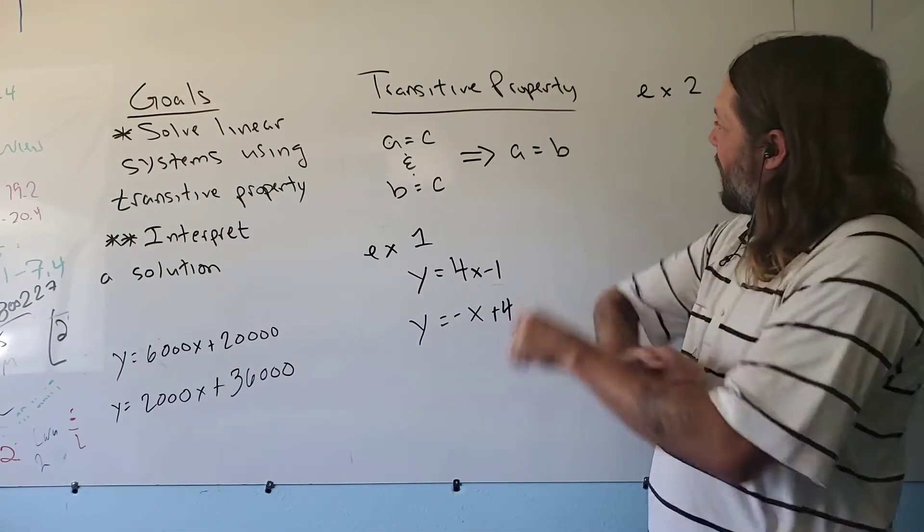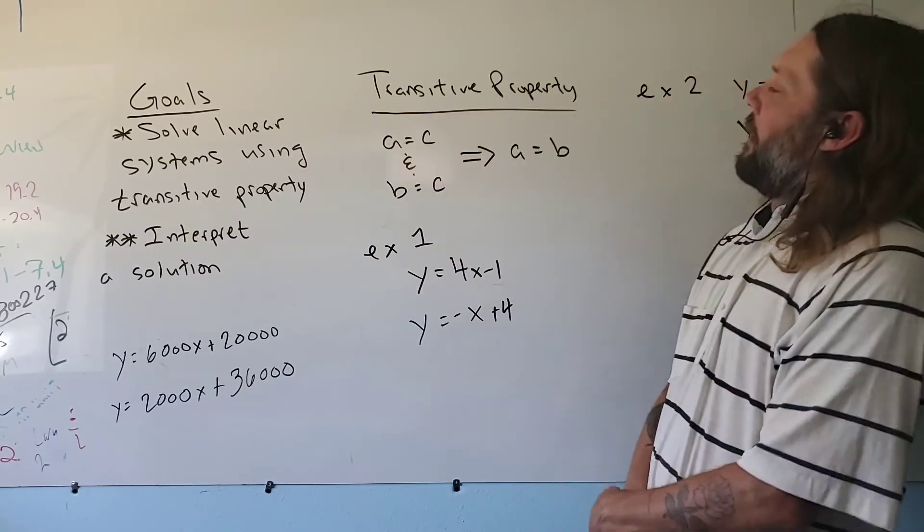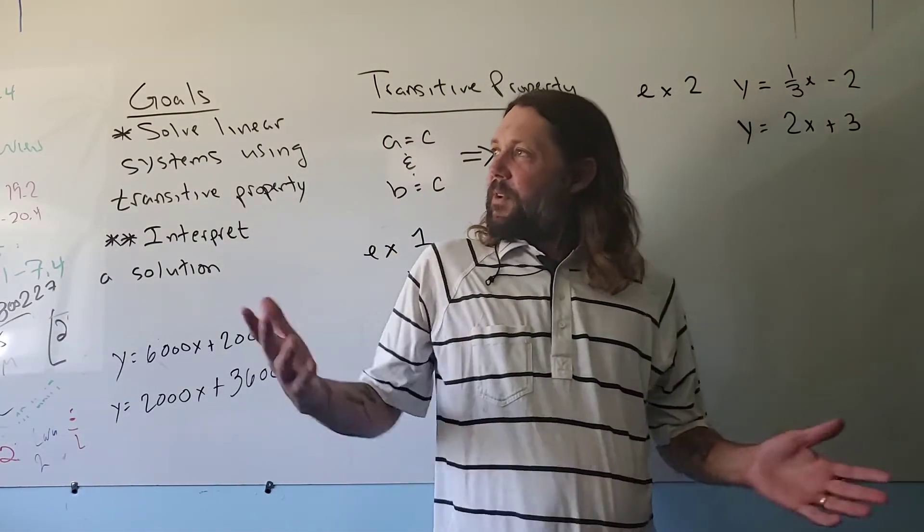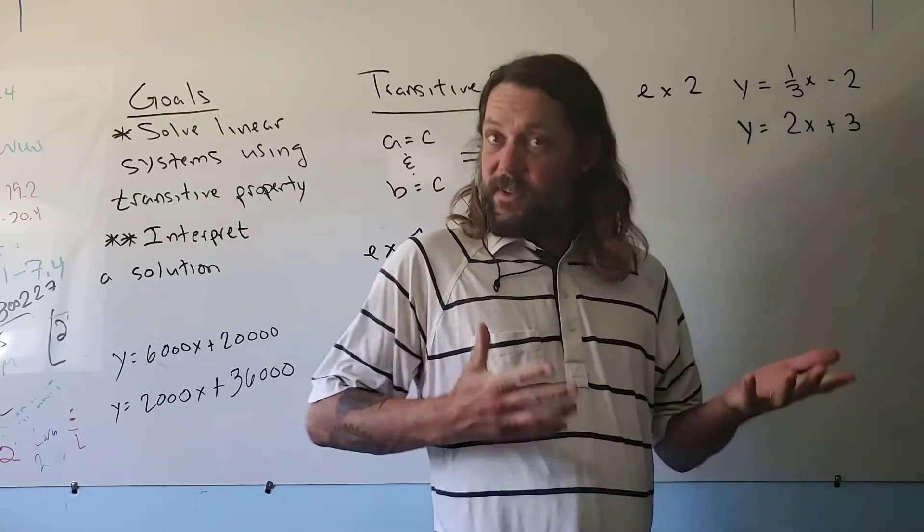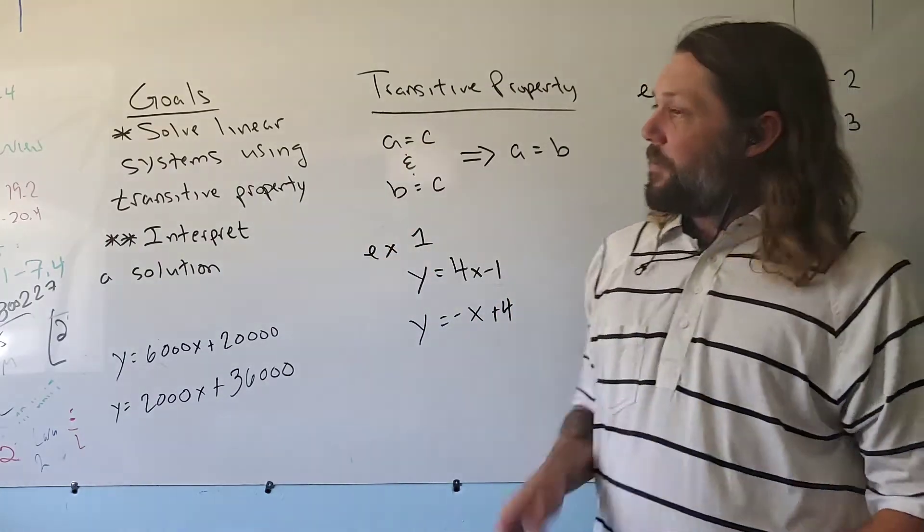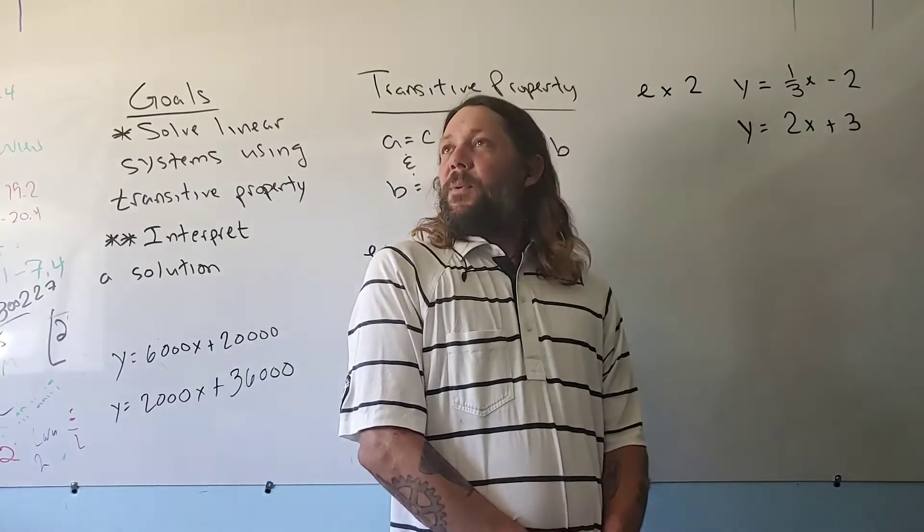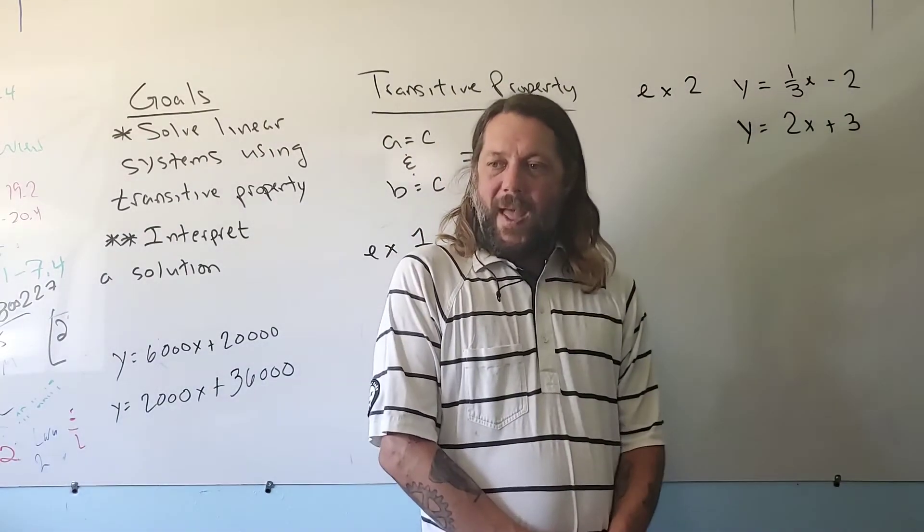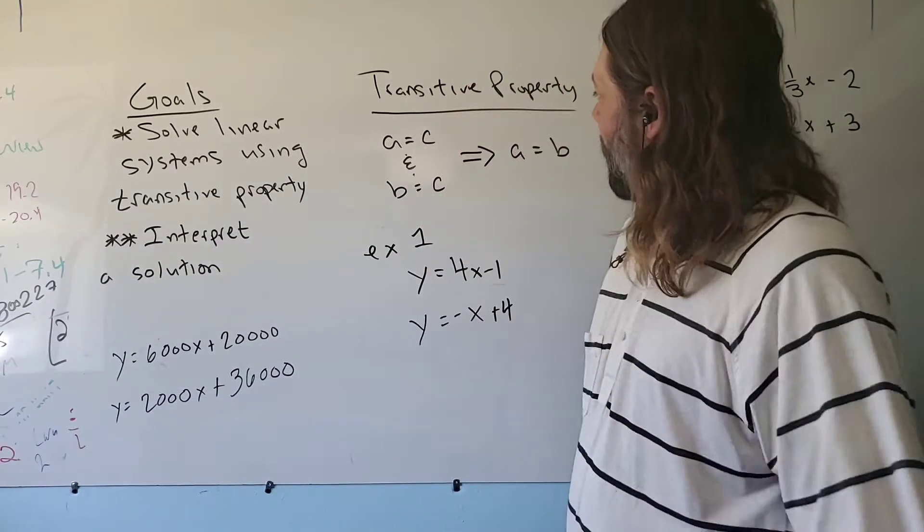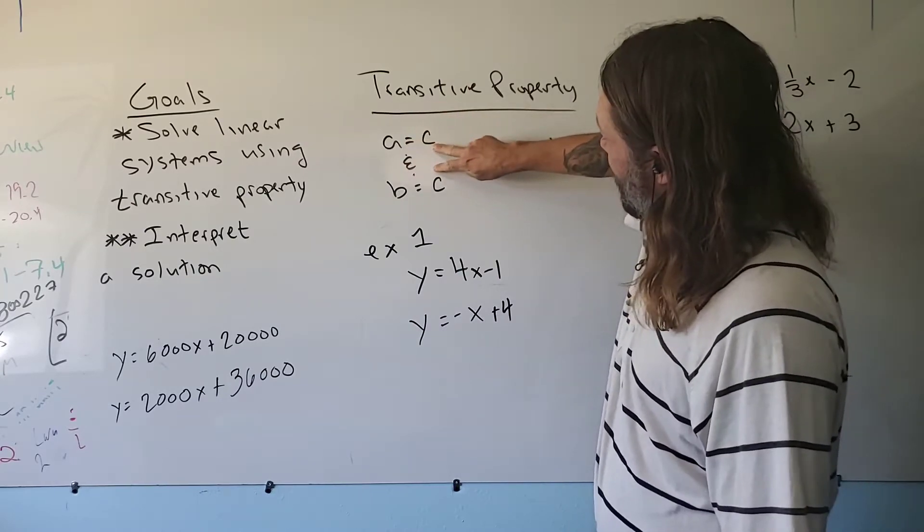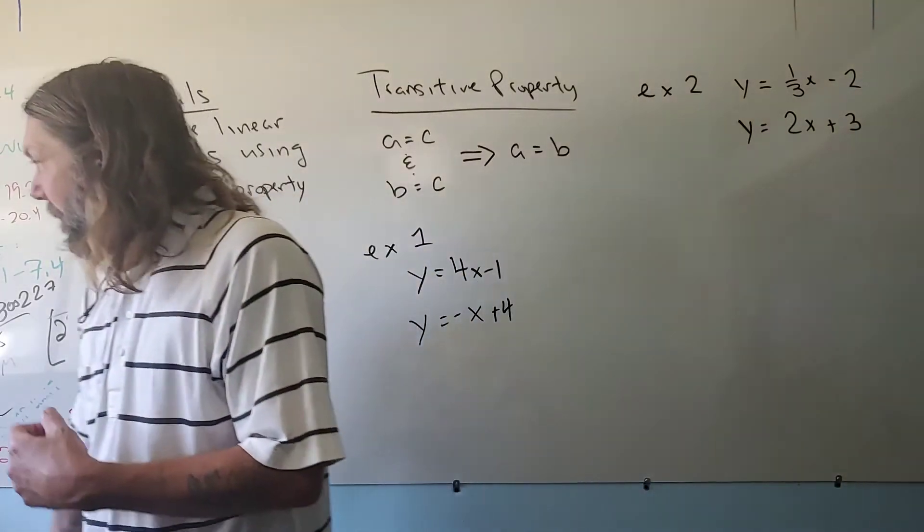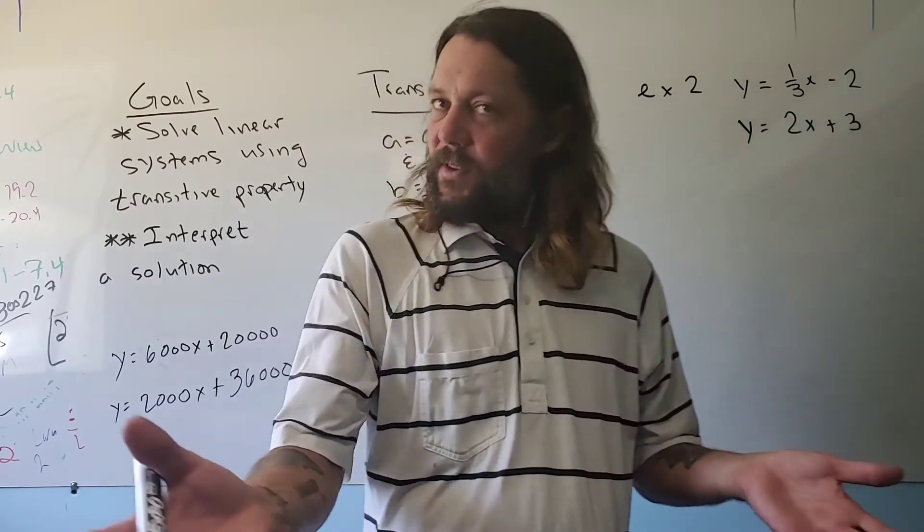The transitive property is a way that we're able to connect two ideas. You guys are actually familiar with the transitive property. Let me give you an example. You know that two $10 bills is the same as a $20 bill. You also know that four $5 bills would be the same as a $20 bill. So what you can logically conclude is that two $10 bills is the same as four $5 bills. Since two things are equal to the same thing, those two things themselves must be equal. We're going to use this to solve systems of linear equations.